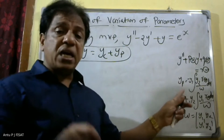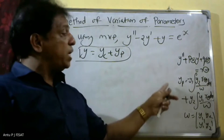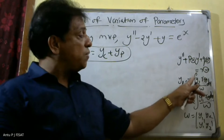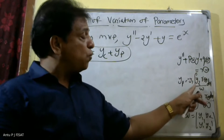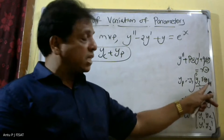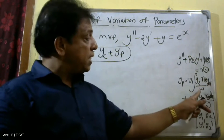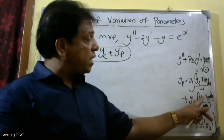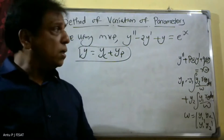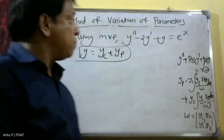To find y_p, we use the formula: minus y1 times the integral of y2 r(x) by w dx, plus y2 times the integral of y1 r(x) dx by w. We can now solve the problem.